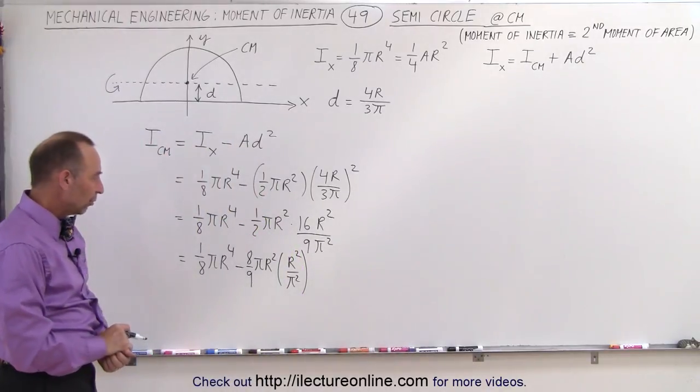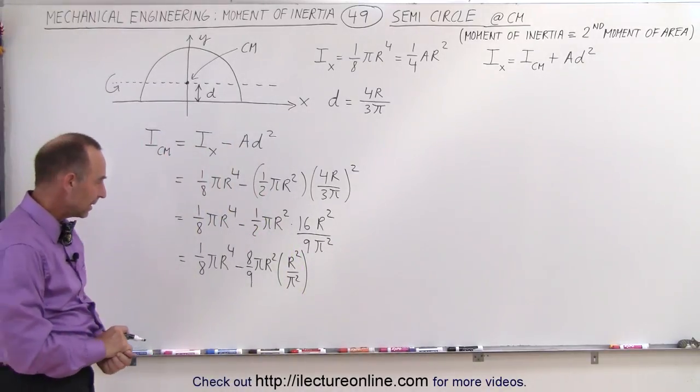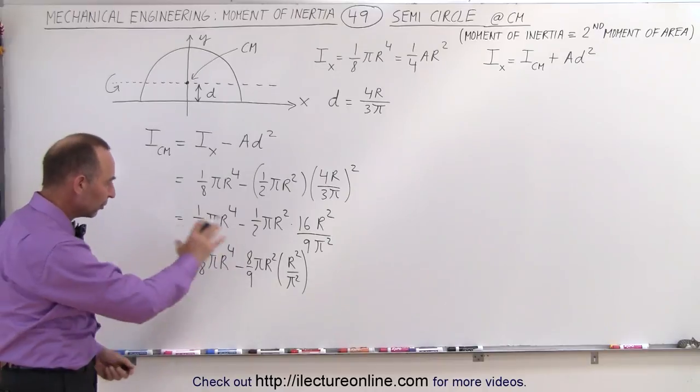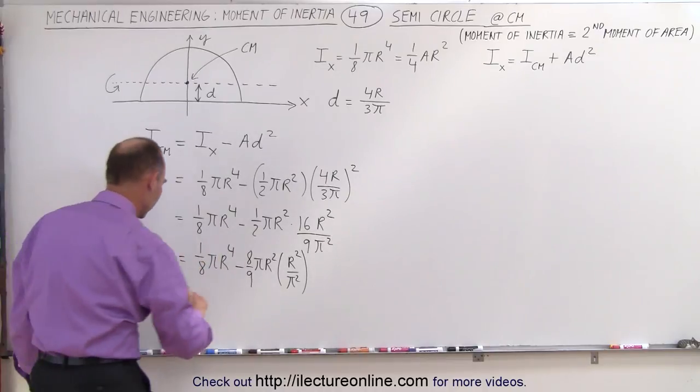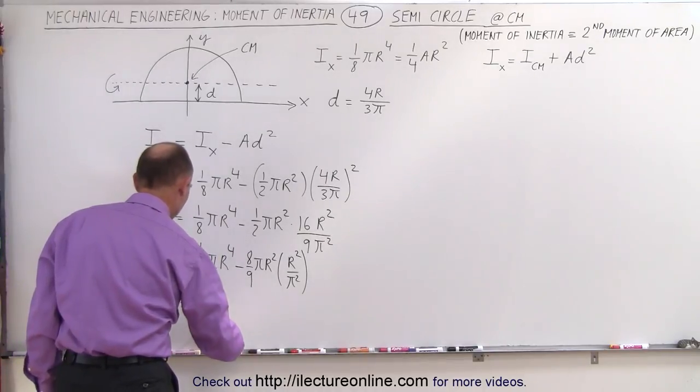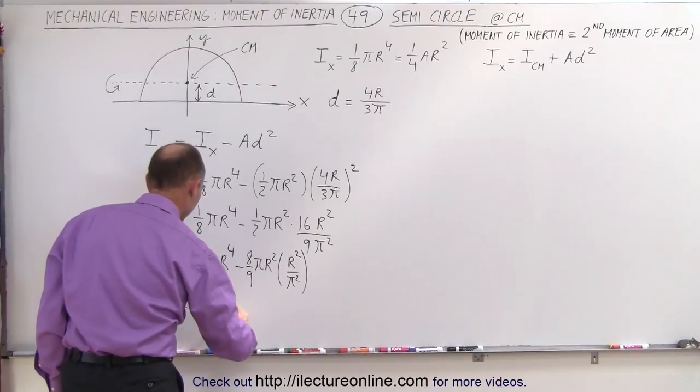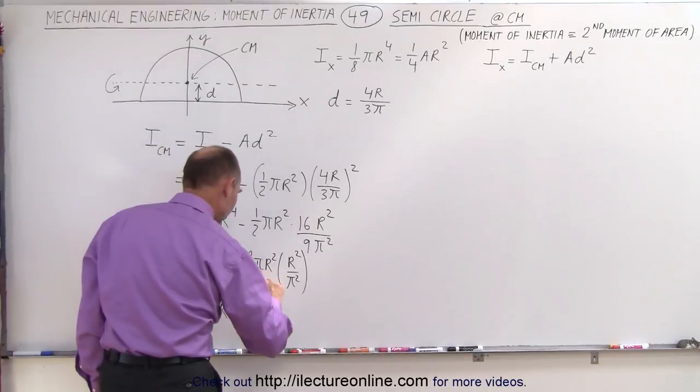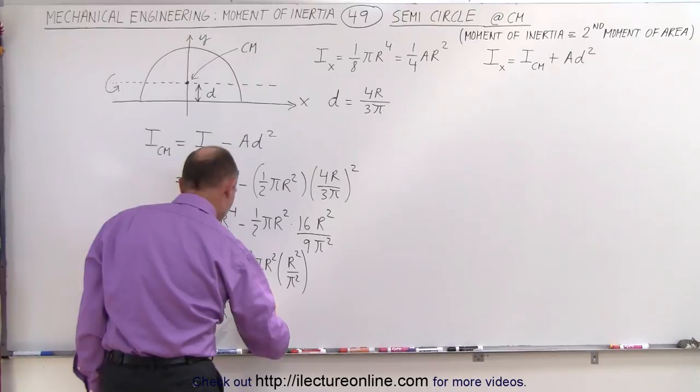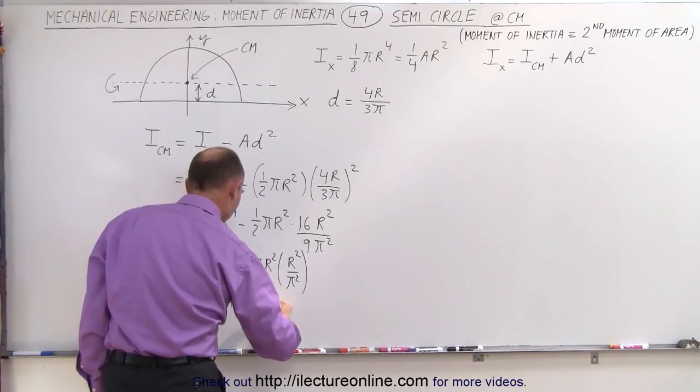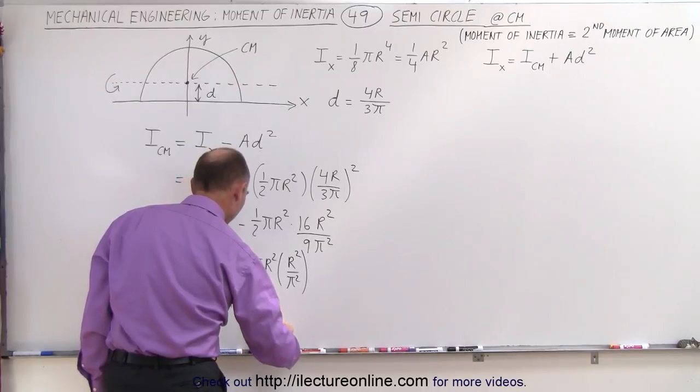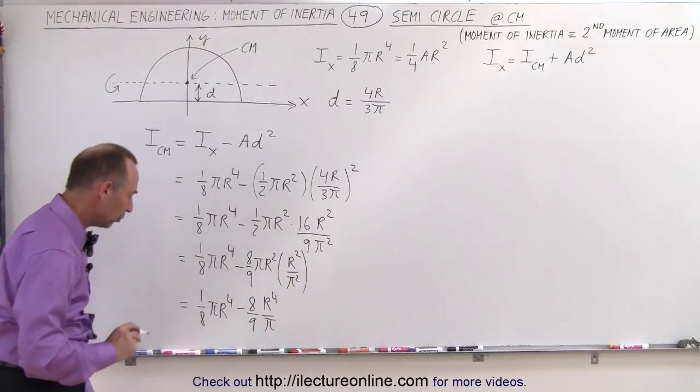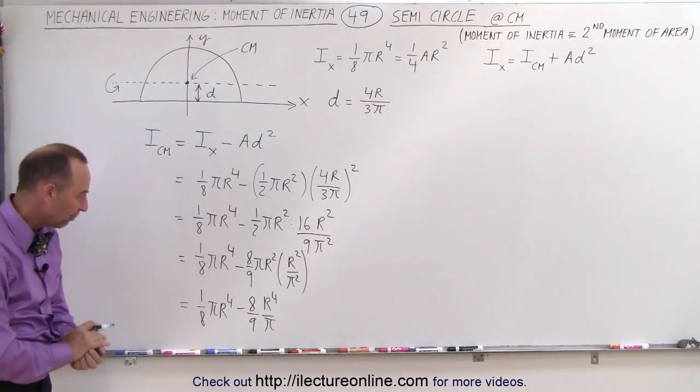So we could pull out an a, and we'll do it two ways. First, we'll just simplify what we have here as much as we can. So this is equal to 1/8 pi r to the fourth, and this will then be minus 8 over 9 r to the fourth divided by pi. So that's in its simplest terms in terms of pi and r.